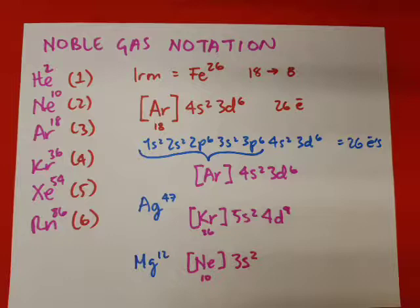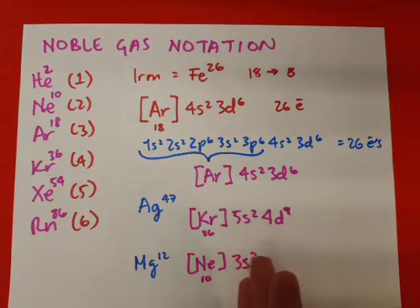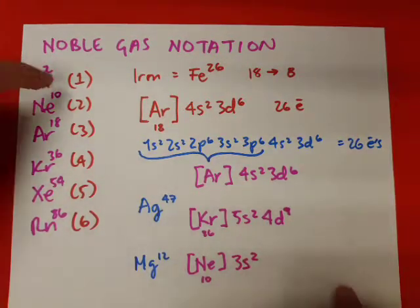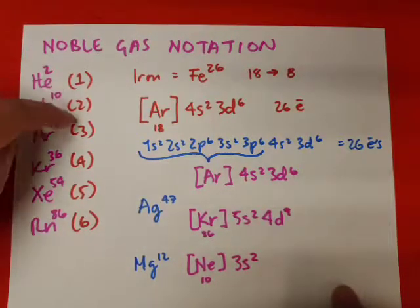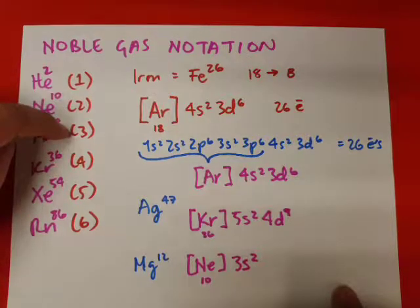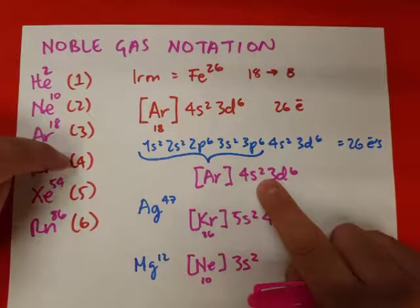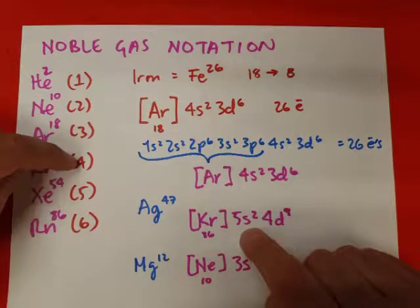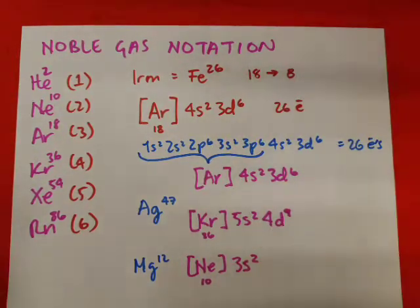So noble gas notation is the advantage that we know exactly the cutoff points for the noble gases. And what do we do? We take that basis and then we continue. Helium ends in 1s, so the next orbital is 2s. Neon ends in 2p⁶, so the next orbital is 3s. Argon ends in 3p, so our next orbital is 4s. Krypton ends in 4p⁶, so our next orbital is 5s. And so forth. So it's really a question of doing some exercises and trying this at home by yourself.